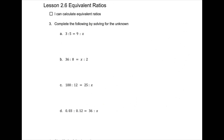Moving on to Lesson 2.6, Equivalent Ratios. You should be able to check this box: I can calculate equivalent ratios. For questions 3a and b, the numbers are small enough that you don't really have to do any calculations — you could probably use mental math to figure out the value of those unknowns. But if it's asking you to show your work, you need to show your work. We do that with cross-multiplying.